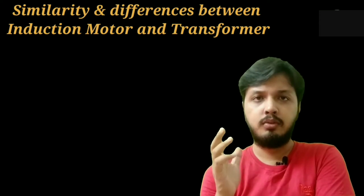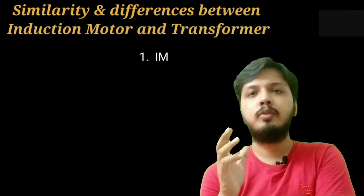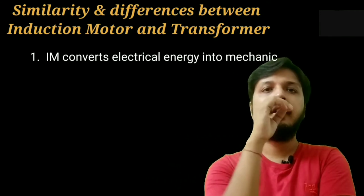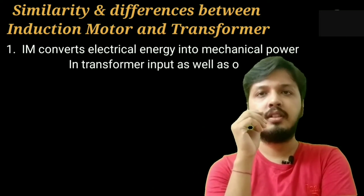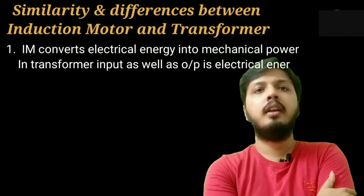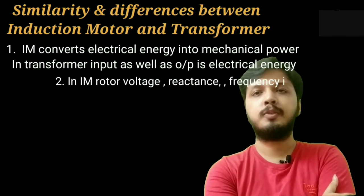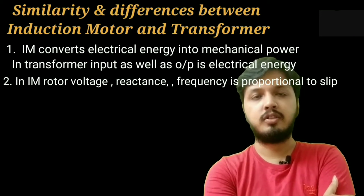Now we are going to discuss about the differences of induction motor and transformer. Induction motor converts electrical energy into mechanical power. In transformer, the input as well as the output is electrical energy. In induction motor, the rotor voltage, reactance, and frequency is proportional to slip. But there is no slip term in the case of transformer.